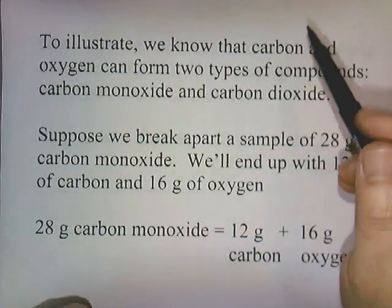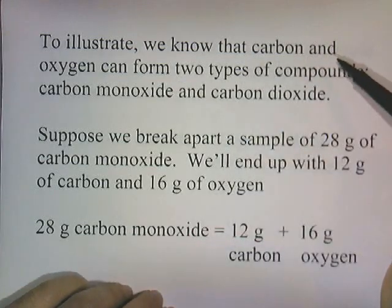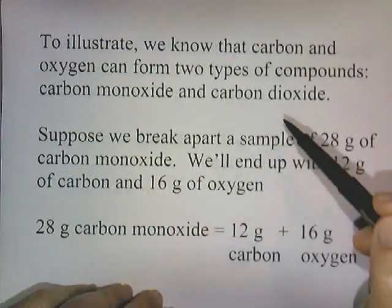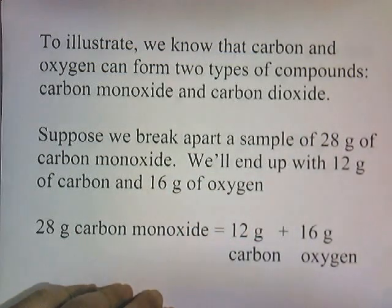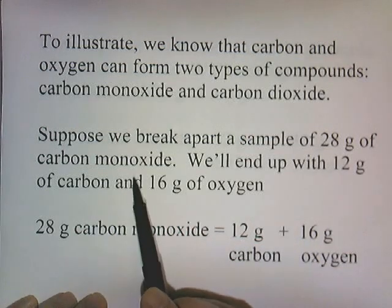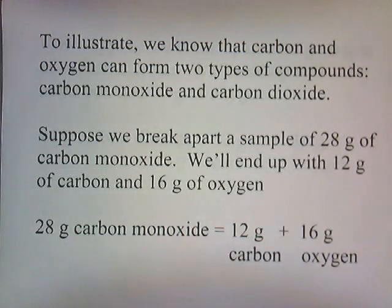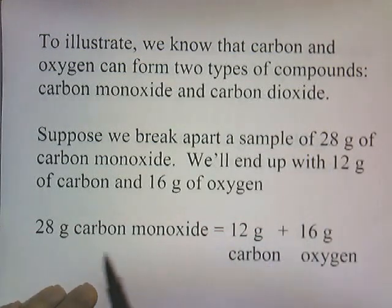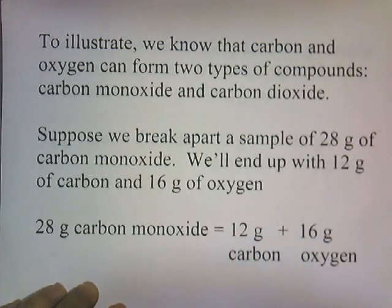To illustrate, we know that carbon and oxygen can form two types of compounds: carbon monoxide and carbon dioxide. Suppose we take a sample of 28 grams of carbon monoxide — a poisonous gas produced in automobile exhaust fumes. I have 28 grams of carbon monoxide and I break it into carbon and oxygen. I'll end up with 12 grams of carbon and 16 grams of oxygen.